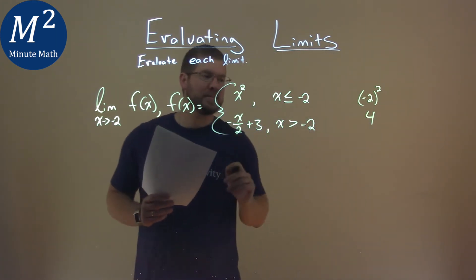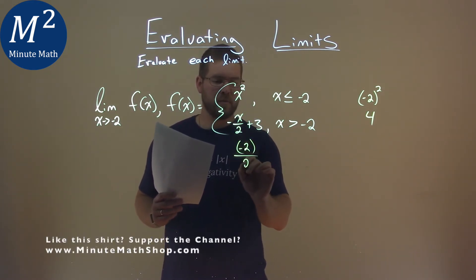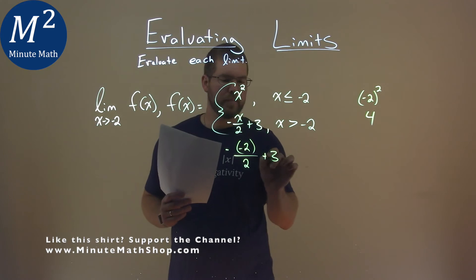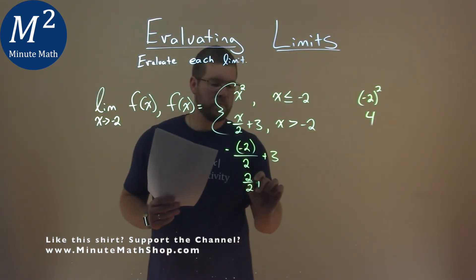The second equation is the same thing. Negative 2 in for x. So we have a negative 2 in for x over 2, negative out front, plus 3. Negative and negative make it a positive, so we have positive 2 over 2 plus 3. And 2 over 2 is 1, plus 3, and 1 plus 3 is 4.